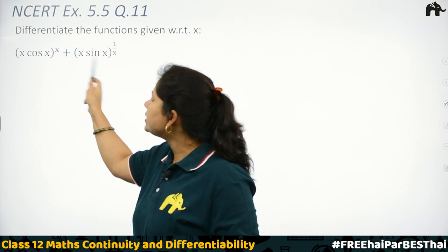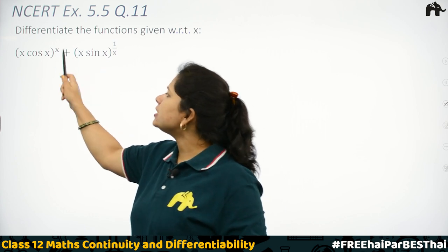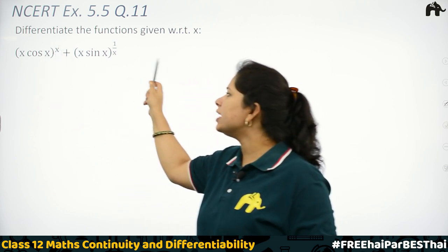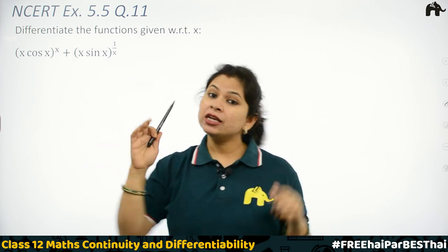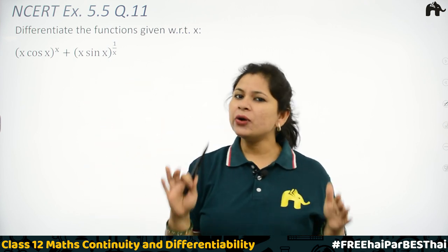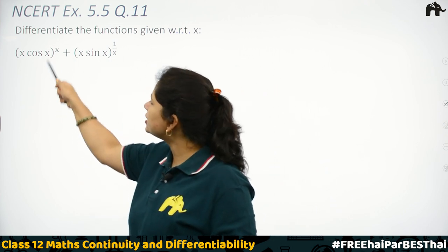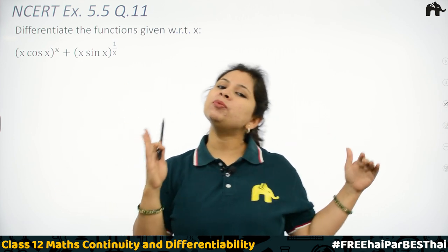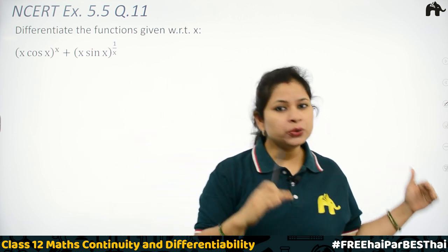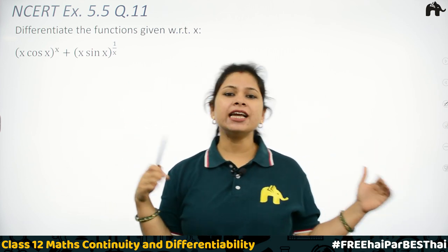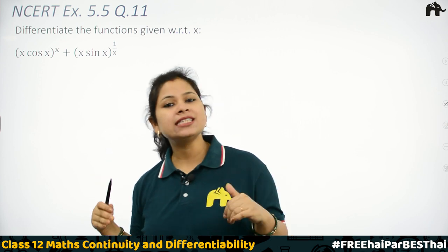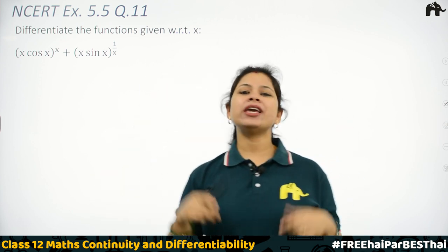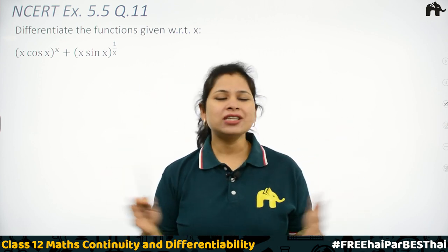And secondly, when we have a plus sign here, that means if we take log of the whole thing it is not going to help us. So what do we need to do? Separately assume this is u and this is v, then separately solve both of them — du upon dx and dv upon dx — because we have to differentiate with respect to x, and then write the solution.